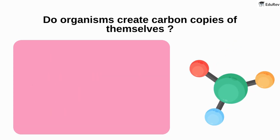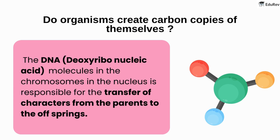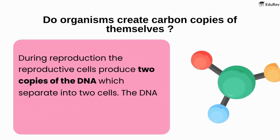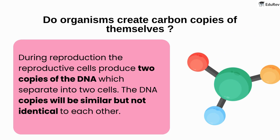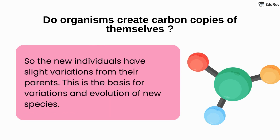Do organisms create carbon copies of themselves? The DNA molecules in the chromosomes in the nucleus are responsible for the transfer of characters from the parents to the offspring. During reproduction, the reproductive cells produce two copies of the DNA, which separate into two cells. The DNA copies will be similar but not identical to each other, so the new individuals have slight variations from their parents.